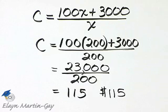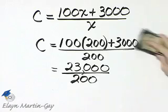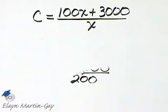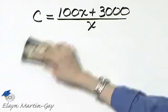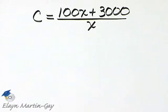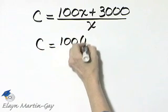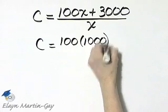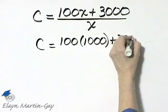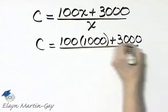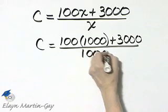Now let's try that again, but when manufacturing 1,000 desks. Let's go back to our original equation. This time we'll let X be 1,000. So the cost will be 100 times 1,000 plus 3,000 all over, again, X is 1,000.